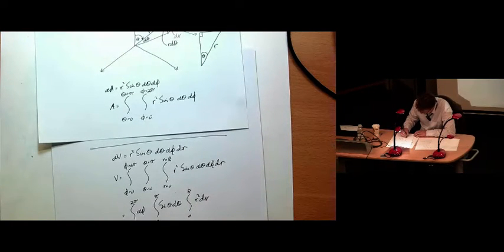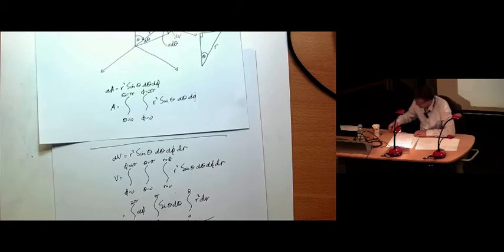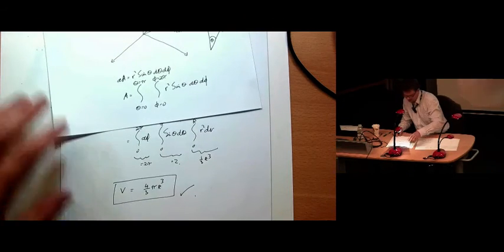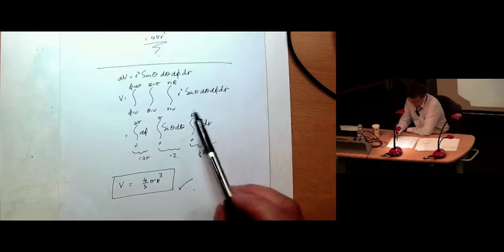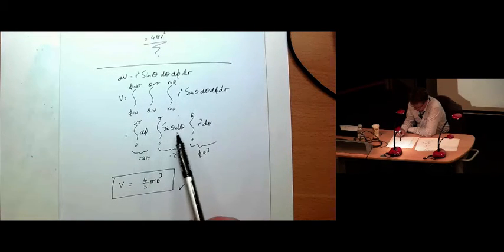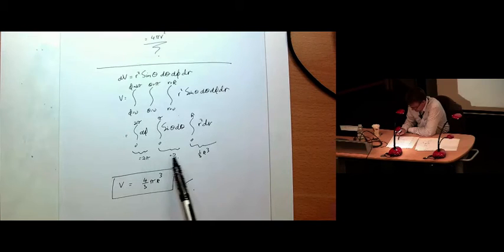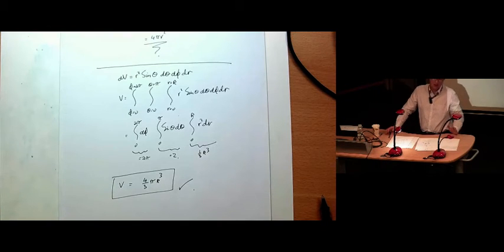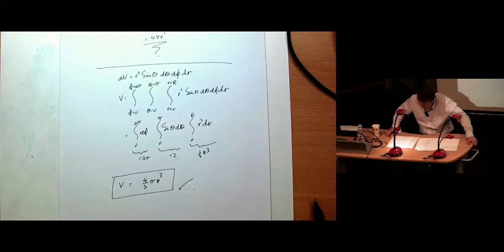So the first one just equals 2 pi. The second one is going to equal 2. And the third one is going to equal 1 third r cubed. Put them all together and I get 4 thirds pi r cubed. So I can split this integral up. Something to do with phi. Something to do with theta. Something to do with r. Do the mass. Work out what these are. Not very complicated. And then multiply them all together. 4 thirds pi r cubed. So I can work out the volume of my sphere.